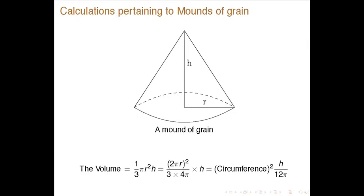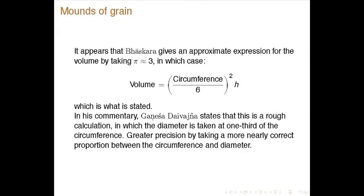He talks about calculations pertaining to mounts of grain. Suppose the grain is in a conical figure. The volume is one-third times base area times height, which can be expressed as circumference² × h / (12π). Bhaskara gives an approximate expression by taking π ≈ 3, giving (circumference/6)² × h as the volume in Lilavati.